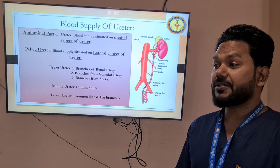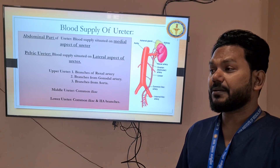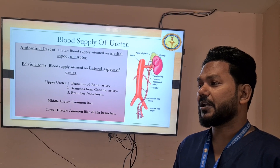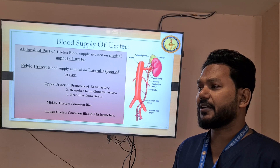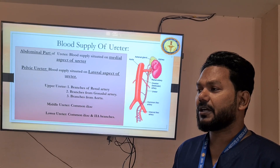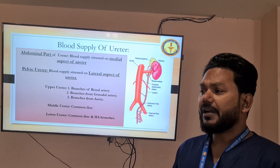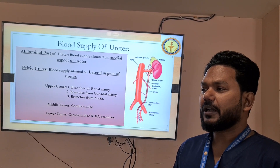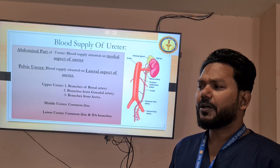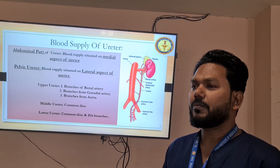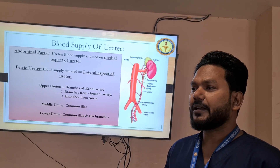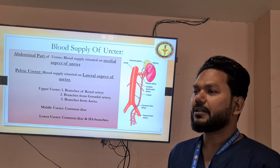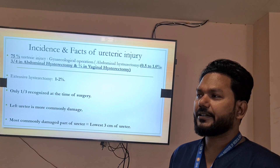For the blood supply: the upper ureter receives branches from the renal artery, gonadal artery, and directly from the aorta; the mid ureter gets its supply from the common iliac; and the lower ureter receives blood supply from the common iliac as well as branches of the internal iliac artery.